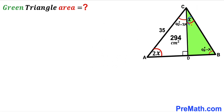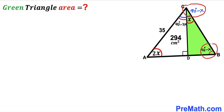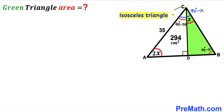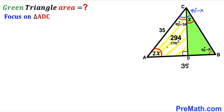We know this angle is x and this angle is 90 degrees minus 2x. When we add these two, we get 90 degrees minus x — identical to the other angle of 90 degrees minus x. Therefore triangle ABC is an isosceles triangle, and side length AC equals side length AB, both equal to 35 centimeters.